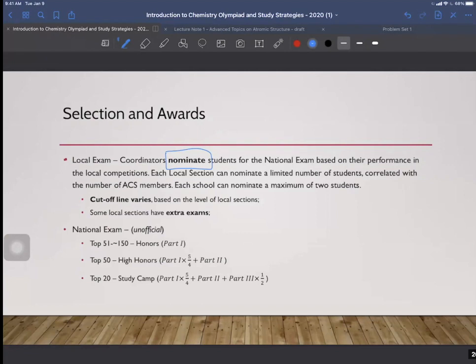But as I mentioned before, there is no certain unique or universal cutoff line for all of the local sections. It varies. Some local sections are more competitive, so they typically have a relatively high cutoff line, say 50 or 55 out of 60, right? But most of them have a cutoff around 40 or even lower than 40. So it really depends.